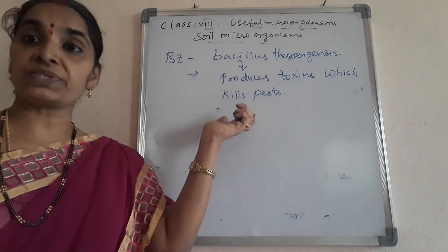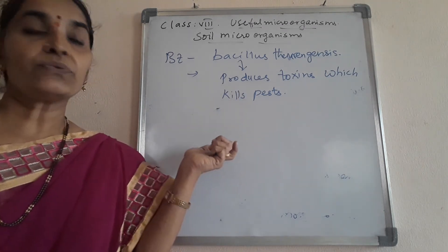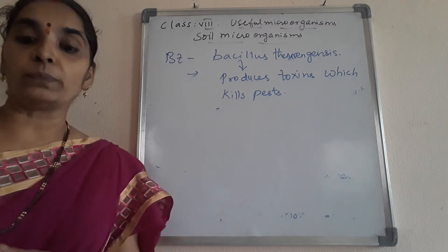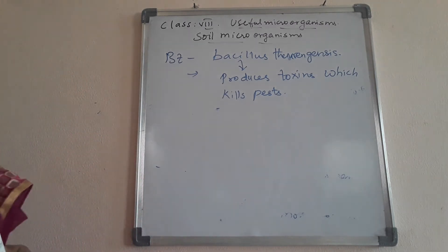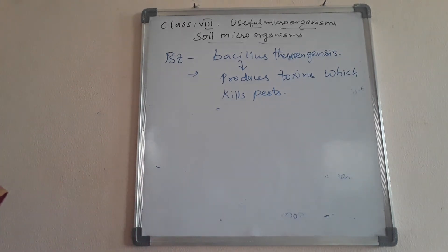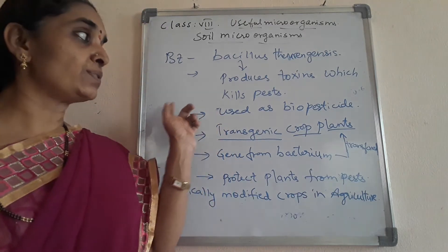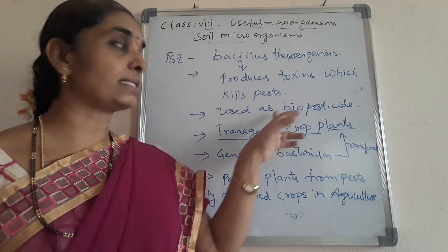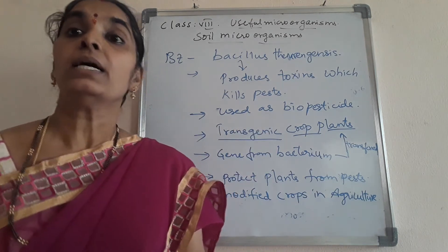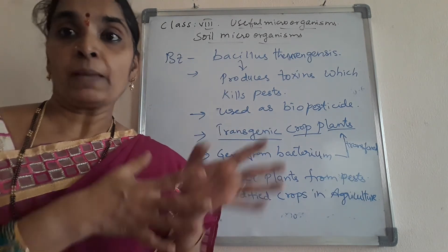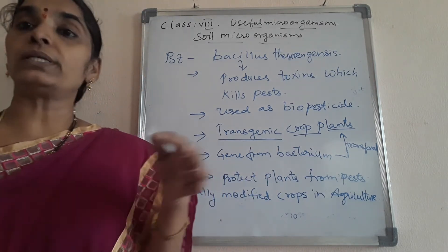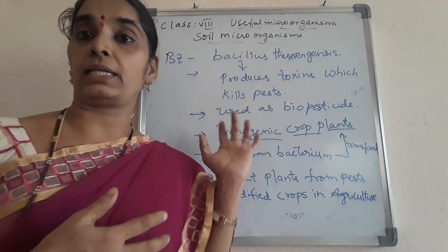How is this useful for plants? In order to get the best crop products, farmers use this bacterium as a bio-pesticide. As a bio-pesticide, it kills the pests that attack the plants. This bacterium is also used in transgenic crop plants.